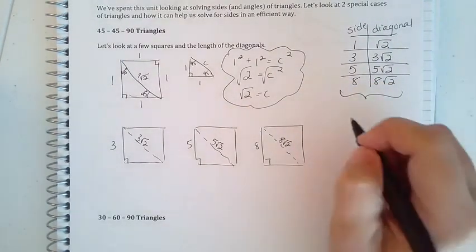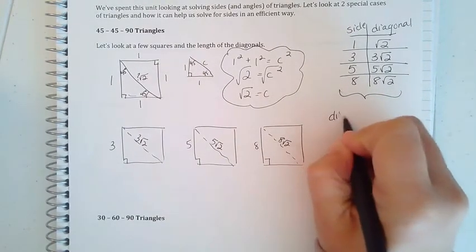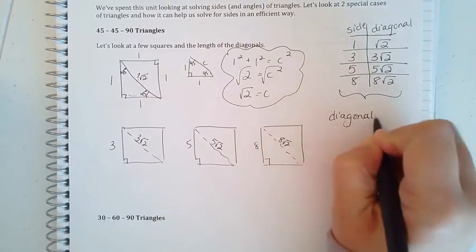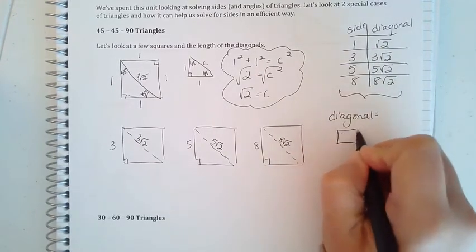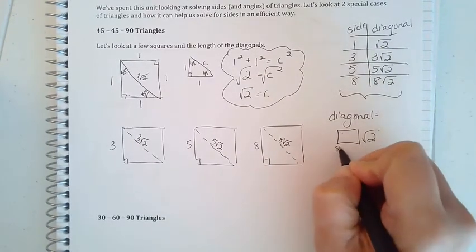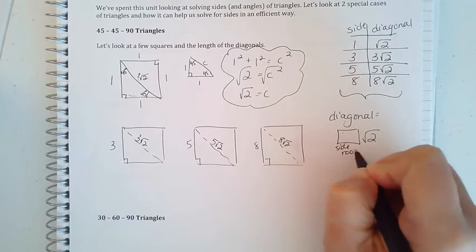What we notice is the diagonal equals the side length times root 2.